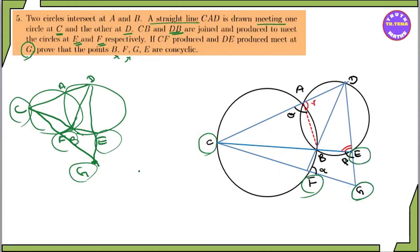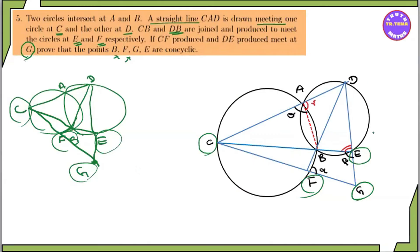Now, when we go to the top, we will use the information from the bottom. The information we have gives us BFGE.